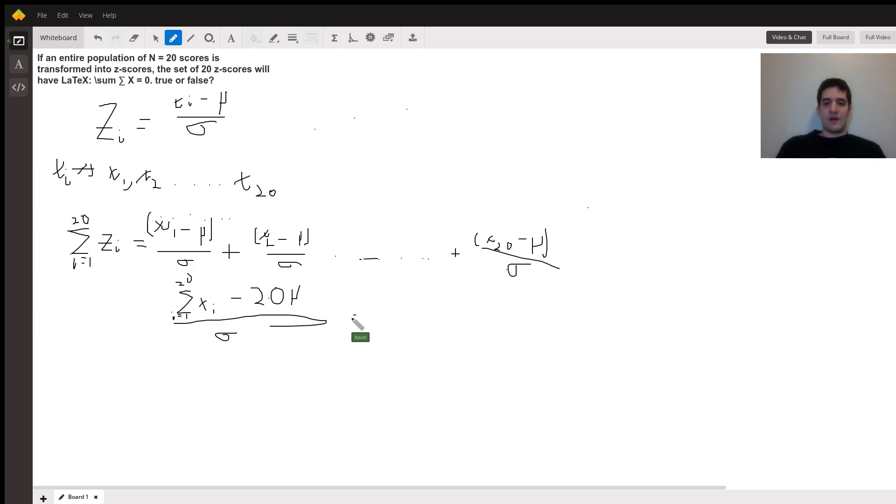Now, here's the cool thing. We know that sum of xi from i equals 1 to 20 divided by 20 would be mu, or average, right?